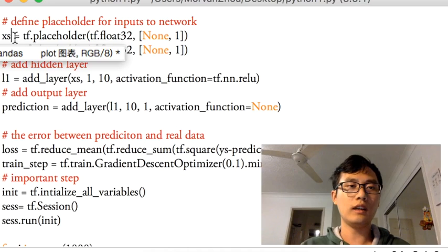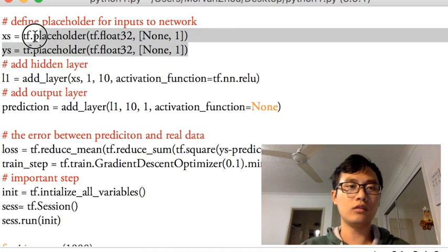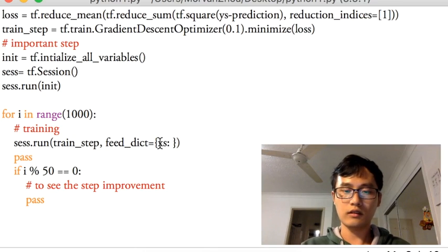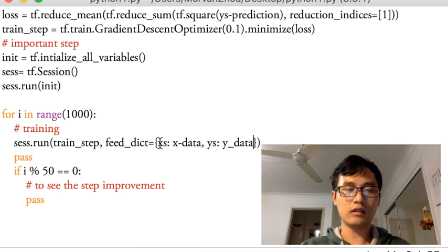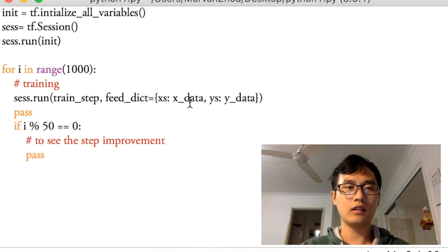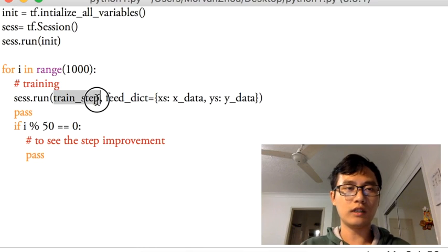And we're going to pass two values because all this step is related to these two placeholders, because we're going to use x and y for the training step. So these are two placeholders, we're going to pass two values into the placeholder. So feed_dict, x: x_data, y: y_data. For every training step, we're going to use x_data and y_data to train the neural network.